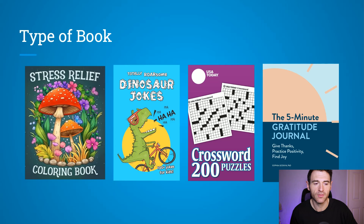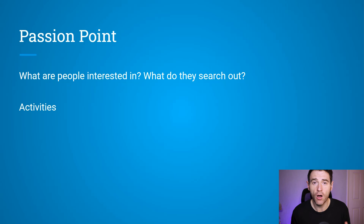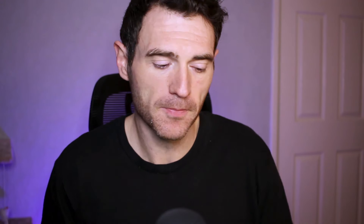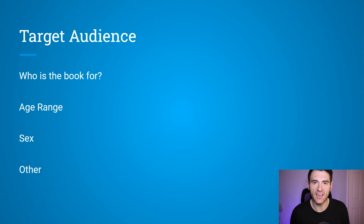Once you've identified the types of books you want to create, we come on to the passion point. The key reason is that once we identify what people are interested in, we can find out what they're actually searching for and likely to buy. This could be activities and sports, hobbies like gardening or stamp collecting, or things people love — like french bulldogs or their local sports team. Then the next important thing is your target audience: who are you making this book for? That's often an age range — kids, adults, seniors, or specifically age four to eight — as well as sex, or roles like parents, dads, or wives.